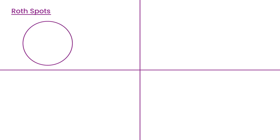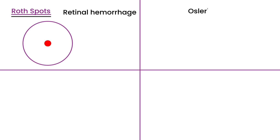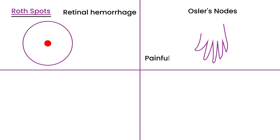The first specific finding is called Roth spots. A Roth spot is basically a retinal hemorrhage that you would see on a fundoscopic exam. It typically has a white pale center and can be noticed during an eye exam. The next finding is Osler's nodes — painful lesions on the hands that are red and raised, and are definitely associated with endocarditis.